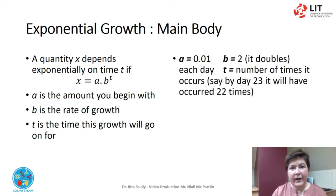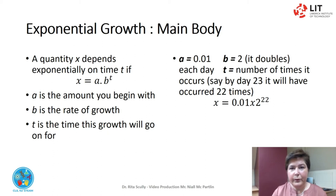So a is 1 cent, b is 2, and t is the number of times it occurs. Let's see what our savings would be on day 23 — it would have occurred 22 times. So our formula will be x equals 0.01 multiplied by 2 to the power of 22. x equals 41,943 euro and 4 cents on day 23 of our savings.